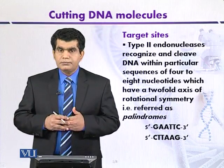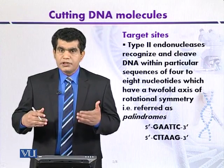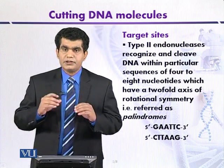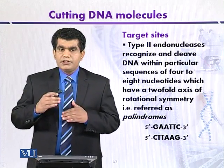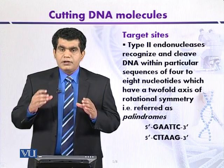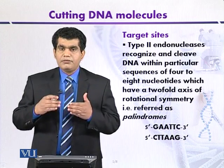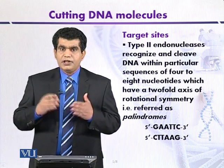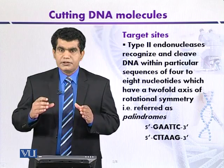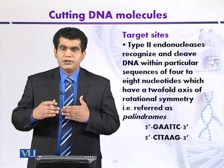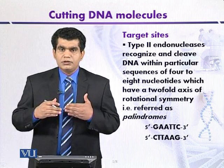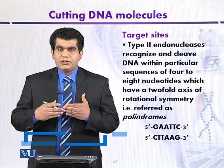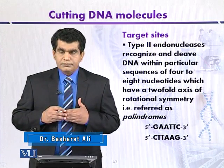Target sites. Type 2 restriction endonucleases can recognize a particular target site and cut within it. These type 2 restriction enzymes can cut those recognition sites that have rotational symmetry. Simply, they recognize specific nucleotide sequences or sites — either 4 base pairs, 3 base pairs, or 6 base pairs long — that have rotational symmetry or palindromic sequences.